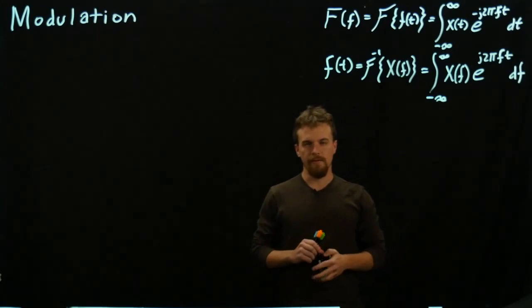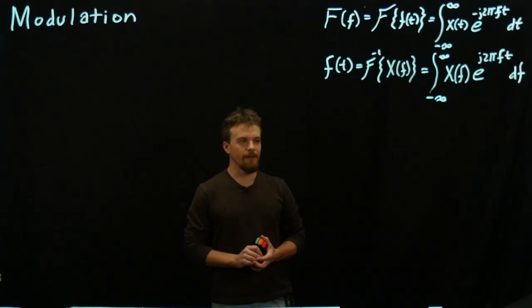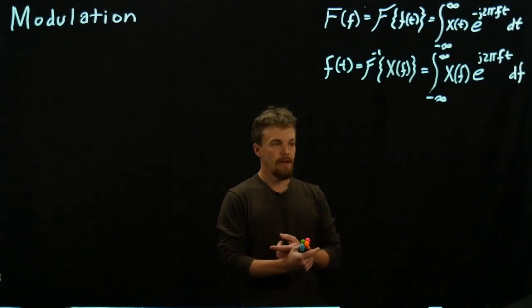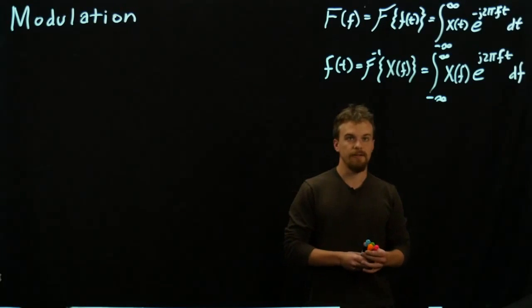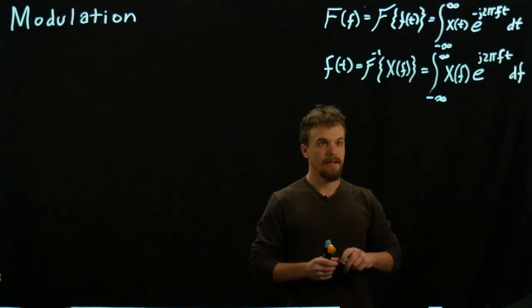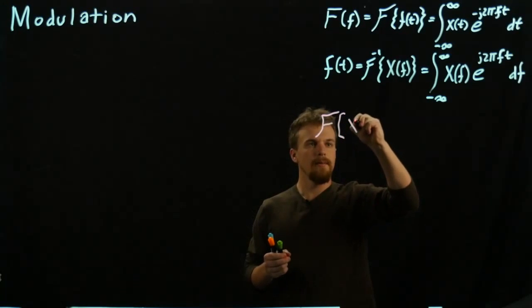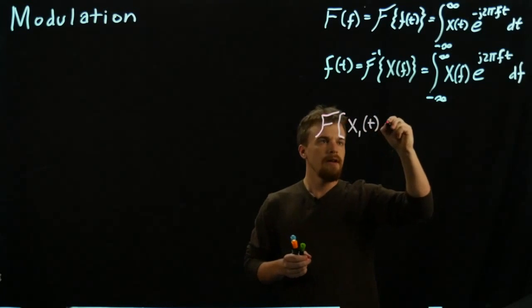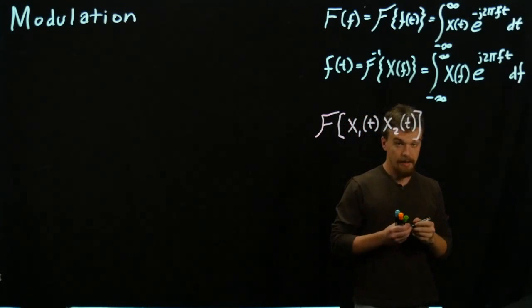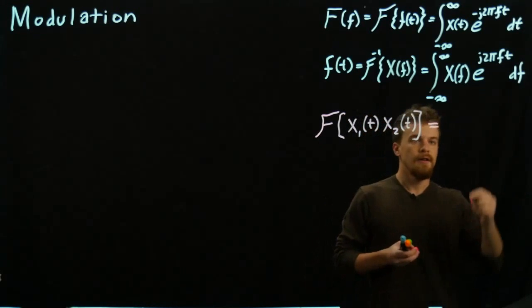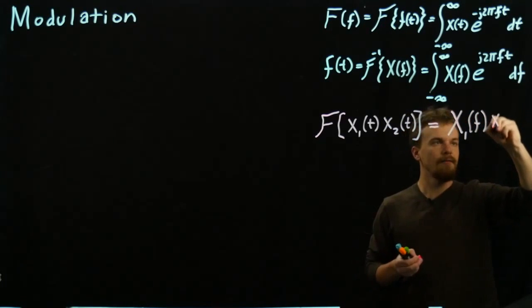What if we have two functions in time and we multiply them together? One of the reasons we like to use the Fourier transform is that convolution in time becomes multiplication in the frequency domain. The reverse is also true: the Fourier transform of x₁(t) times x₂(t) — two time functions multiplied together — equals the Fourier transform of one convolved with the Fourier transform of the other.